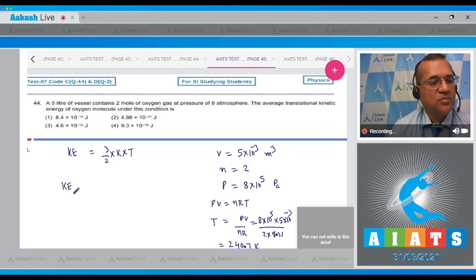Use the average kinetic energy of the molecule formula. Average is 3/2 times Boltzmann constant 1.38×10⁻²³ and the temperature is 240.7.